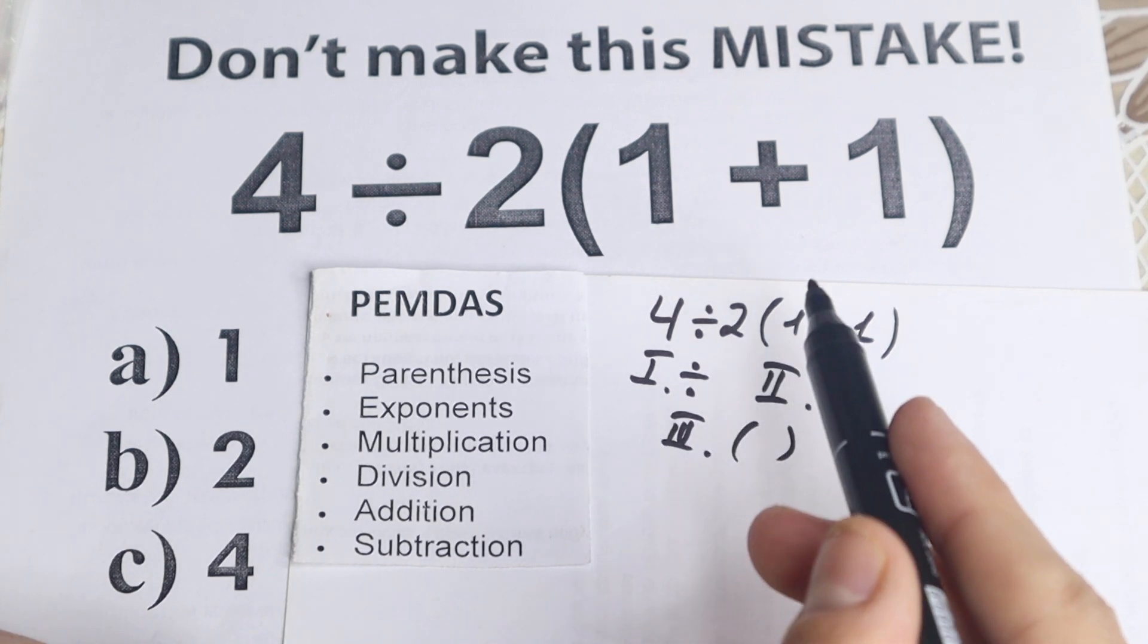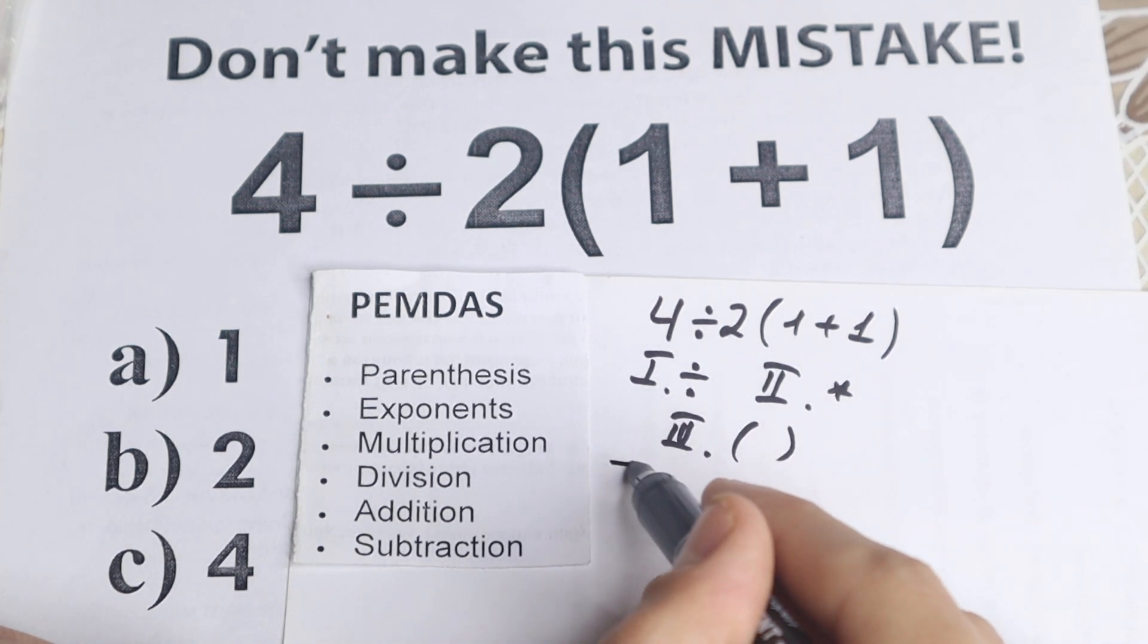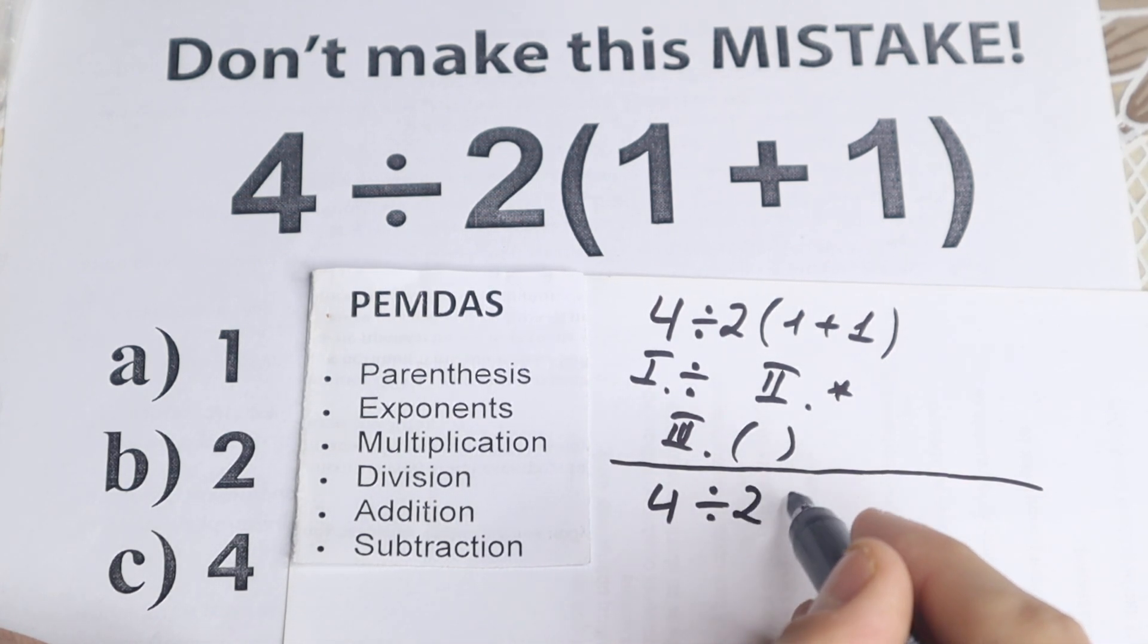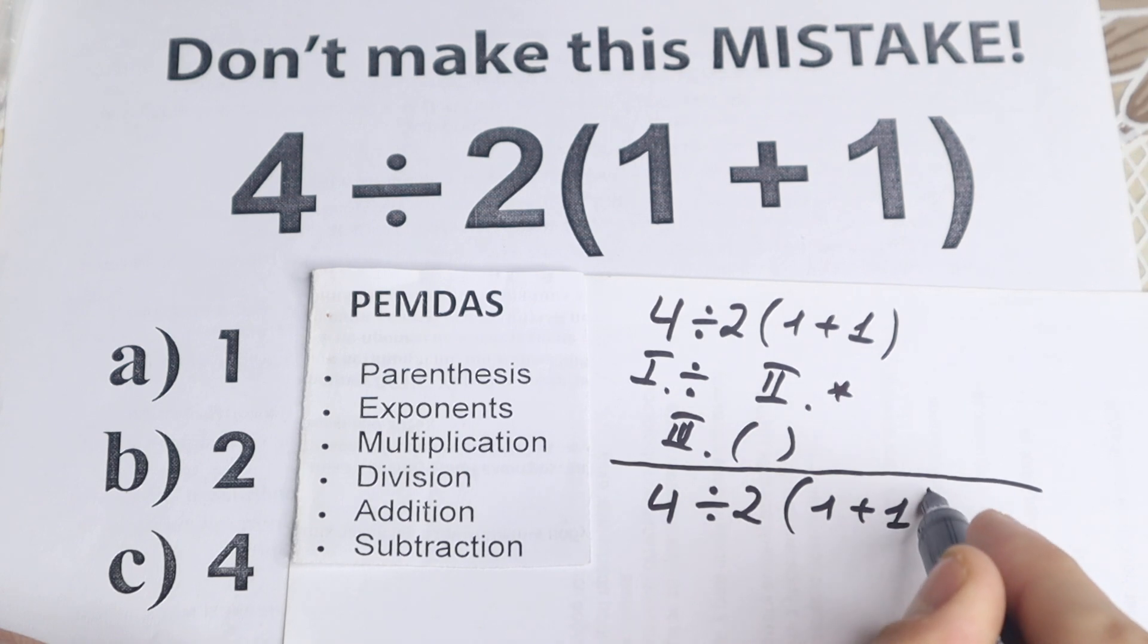What is the first step? Because PEMDAS works from the top to the bottom. And right here I separate this part: we have 4 divided by 2 and in parentheses 1 plus 1.